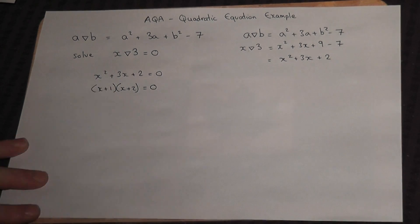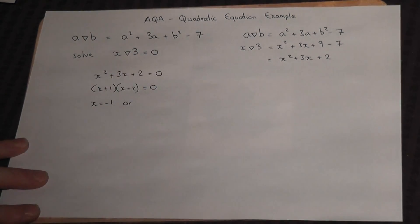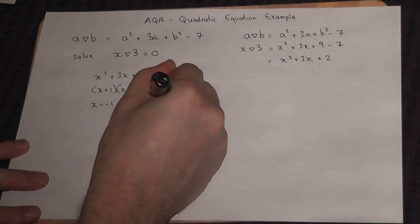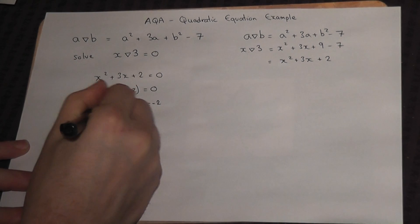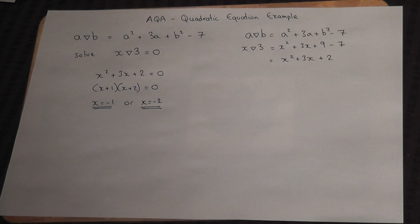To make this bracket equal to 0, x must equal minus 1. Or this bracket, x must equal minus 2. And there are the solutions to this equation.